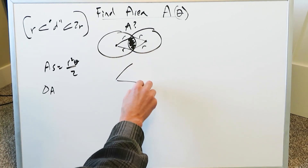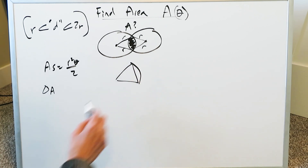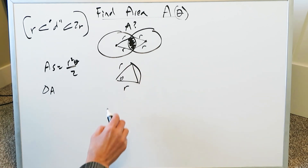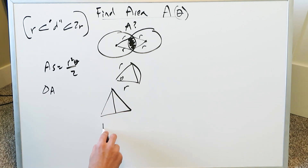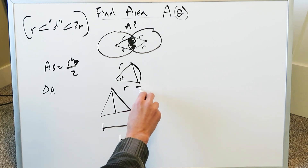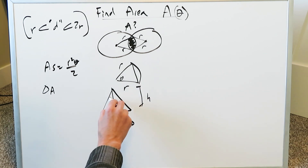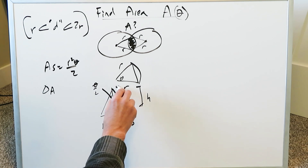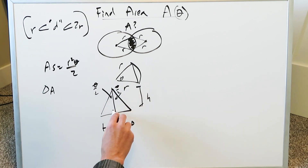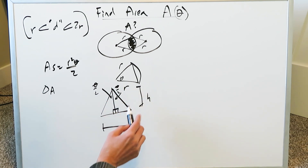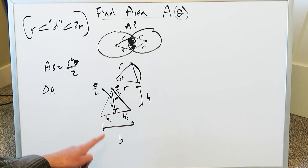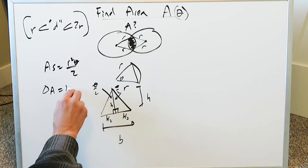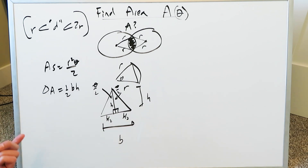To find the triangle area, bring out one of these sector representations. You have a radius here, a radius here, and an angle theta. Rotate this triangle and cut it across — you have a certain base and a certain height. The angle theta has been split into theta over 2 on each side. You have a right triangle, and the base has become b over 2 on each side. All you have to do is find the dimensions of the base and the height, and use the formula: half times base times height.